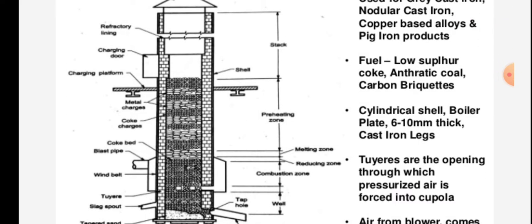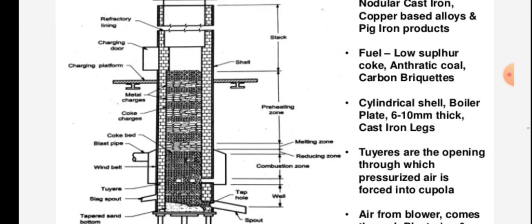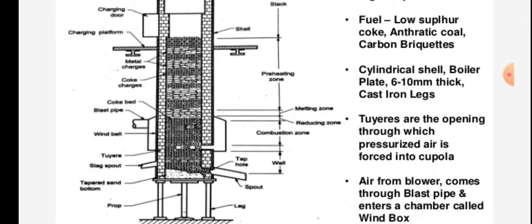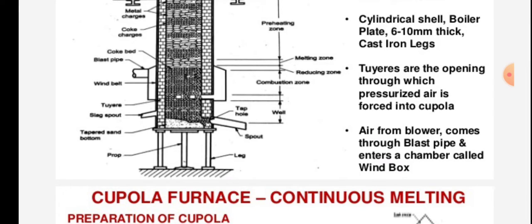In the cupola furnace, components include the spark arrestor, refractory lining, charging door, stack, shell, charging platform, metal charges, coke charges, preheating zone, coke bed, melting zone, reducing zone, combustion zone, wind belt, tuyeres, slag hole, tap hole, well, and a tapered sand bottom with props and legs for support.